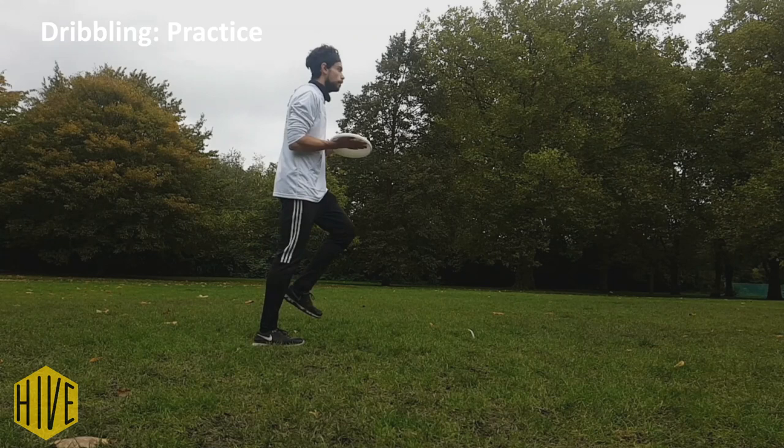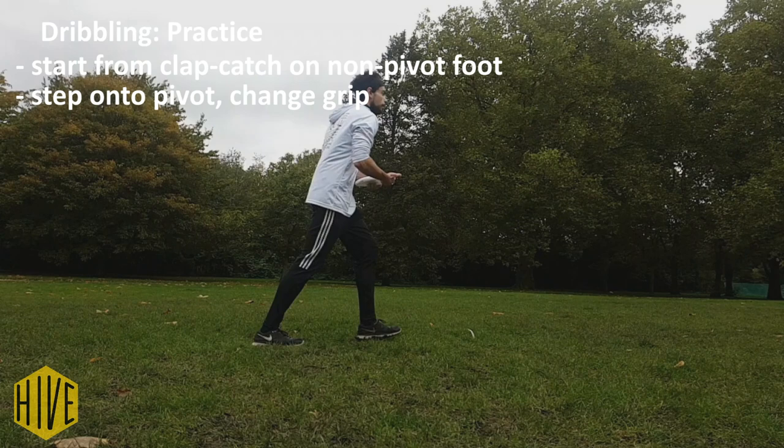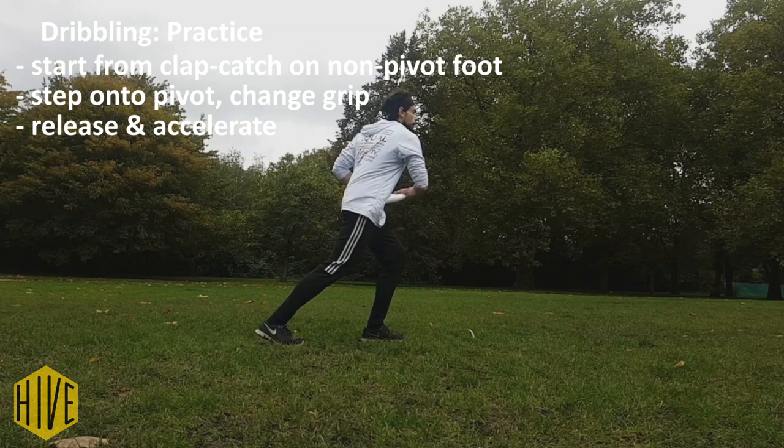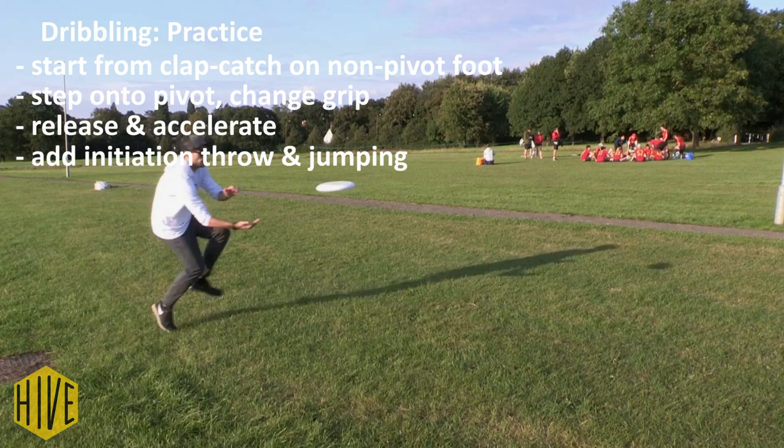The dribbling footwork can be practised in isolation by starting from a clap catch position standing on just your non-pivot foot, before stepping onto your pivot foot, changing grip and making a half-pivot throwing motion. Once you are comfortable changing grip while stepping onto your pivot foot, get a partner to throw the disc to you to practise jumping into the catch and landing on your non-pivot foot. Then step onto your pivot foot, change grip and release the throw before your non-pivot foot touches the ground again. Gradually increase the speed until you are able to perform the technique at almost a full sprint.